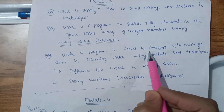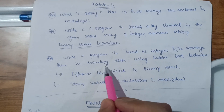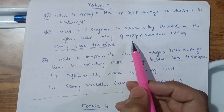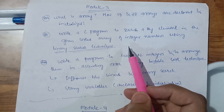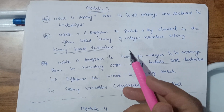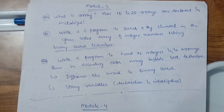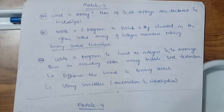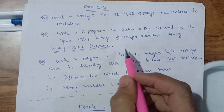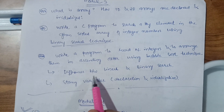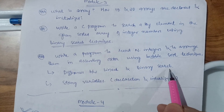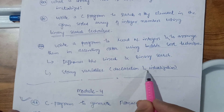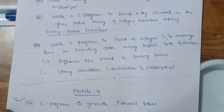Also write a program to read N integers and arrange them in ascending order using bubble sort technique — this will be in the or-part of the question. Both binary search and bubble sort are always asked in the VTU paper; you can verify this by looking at past papers. Also cover the theory: differences between linear and binary search, and static variables — their declaration and initialization.